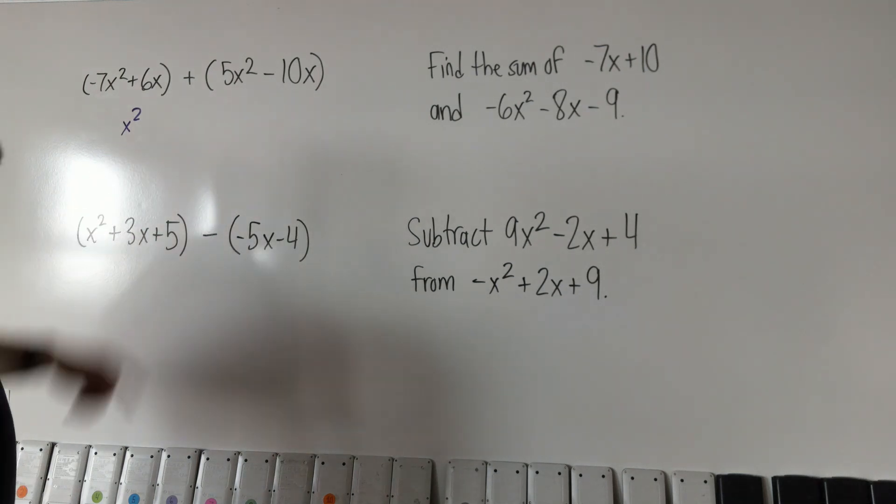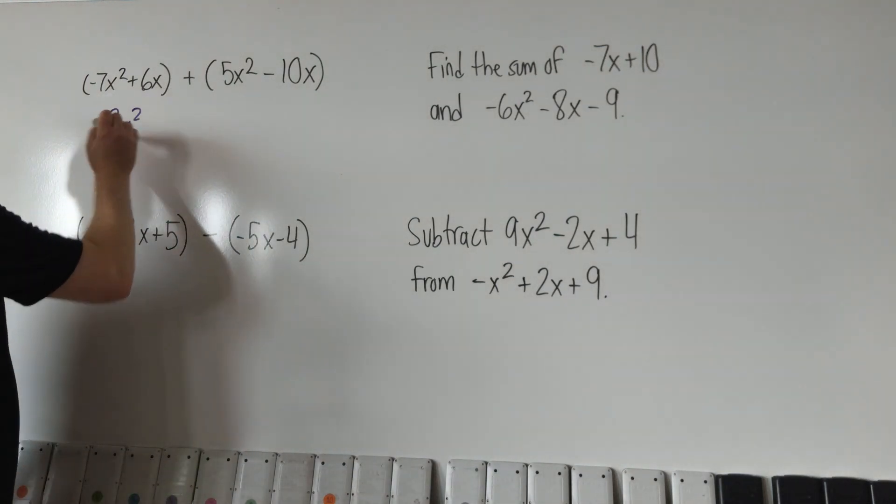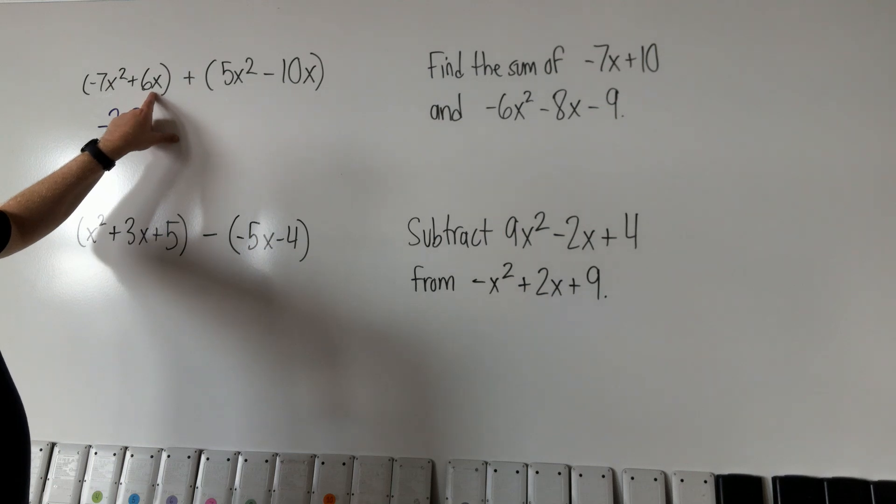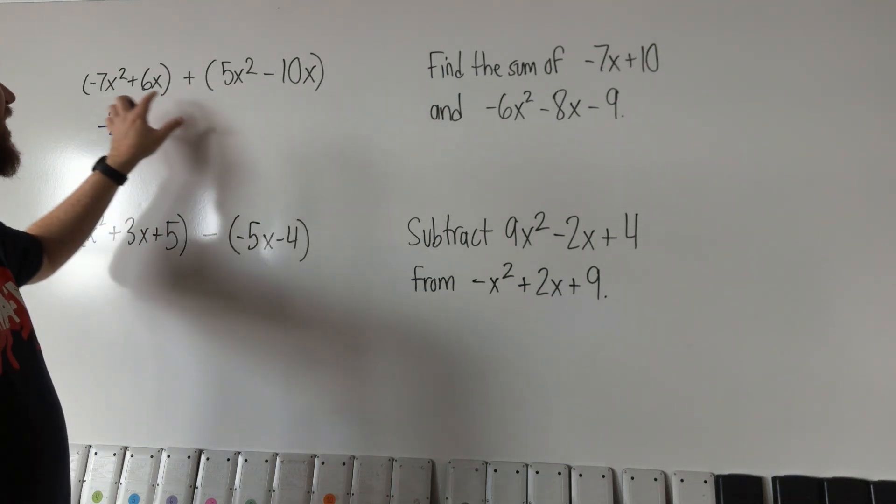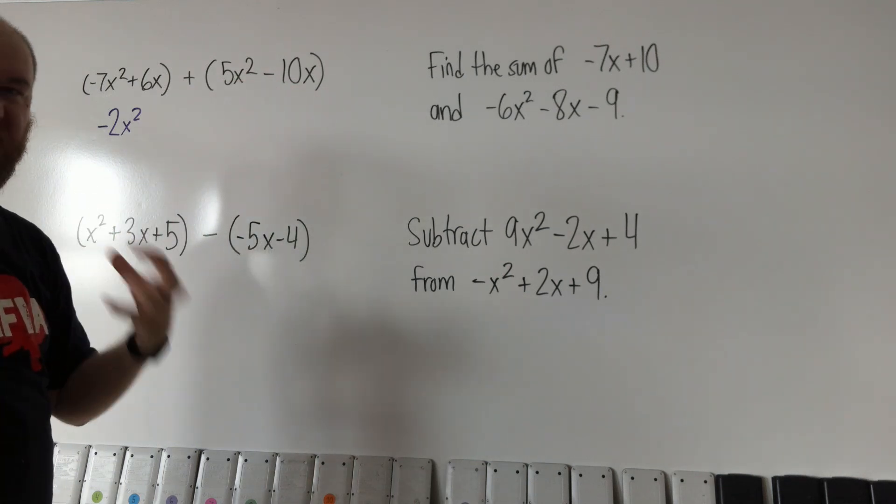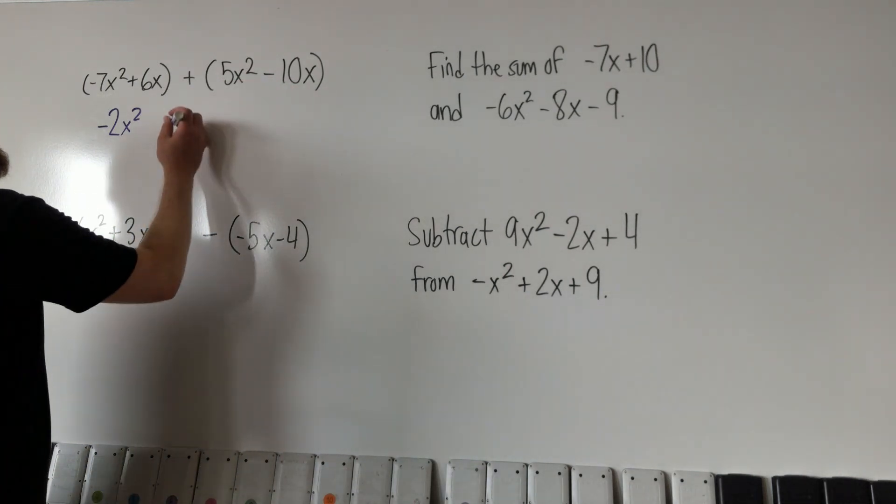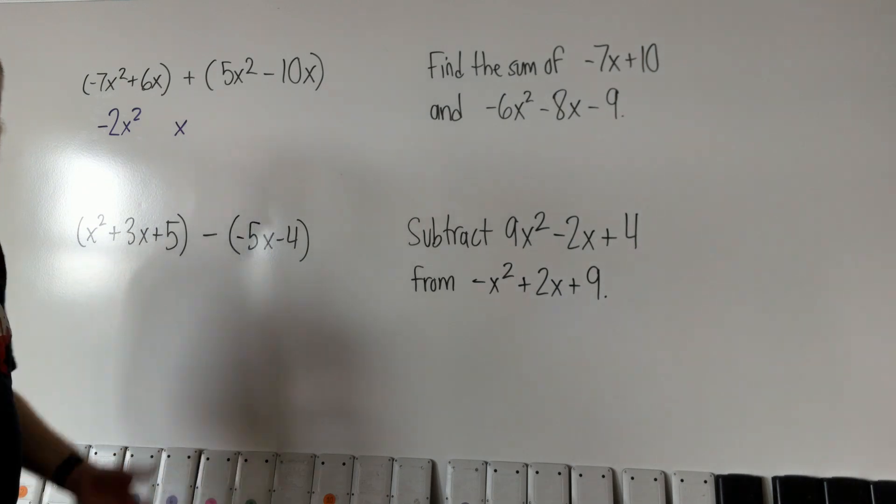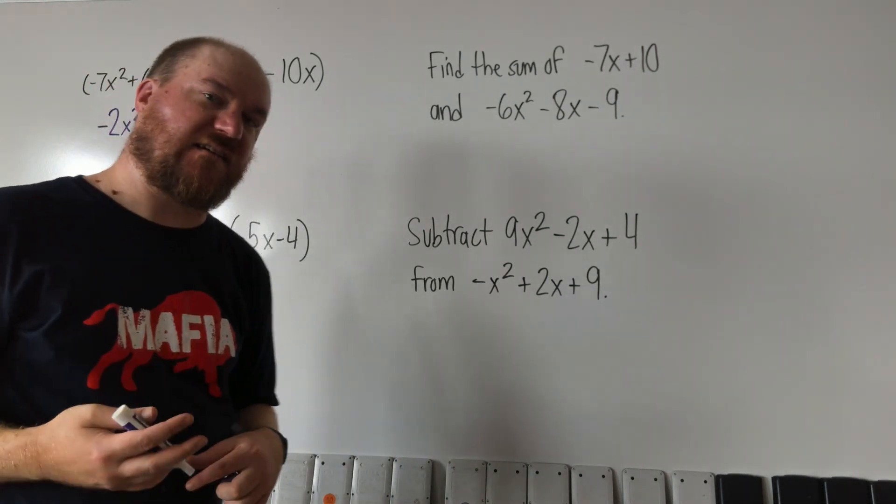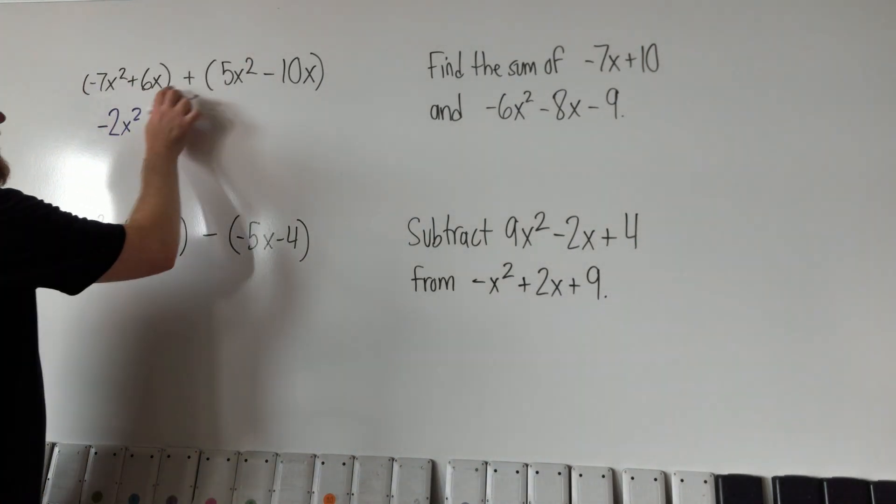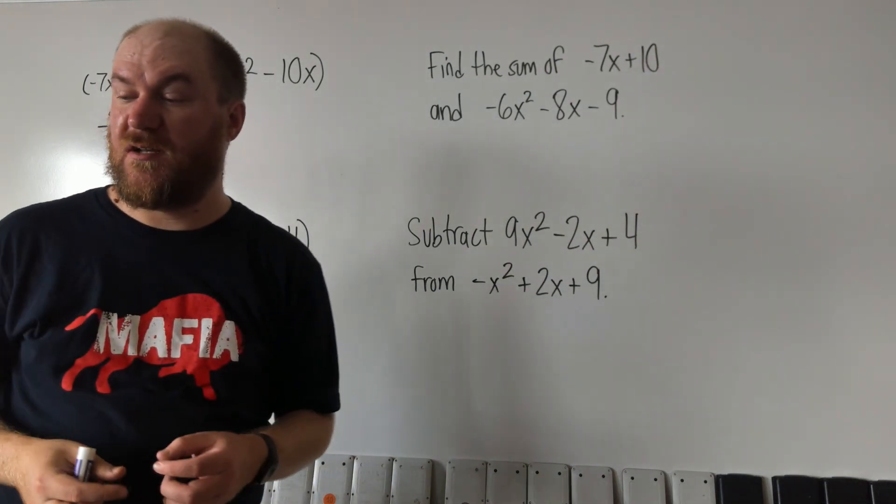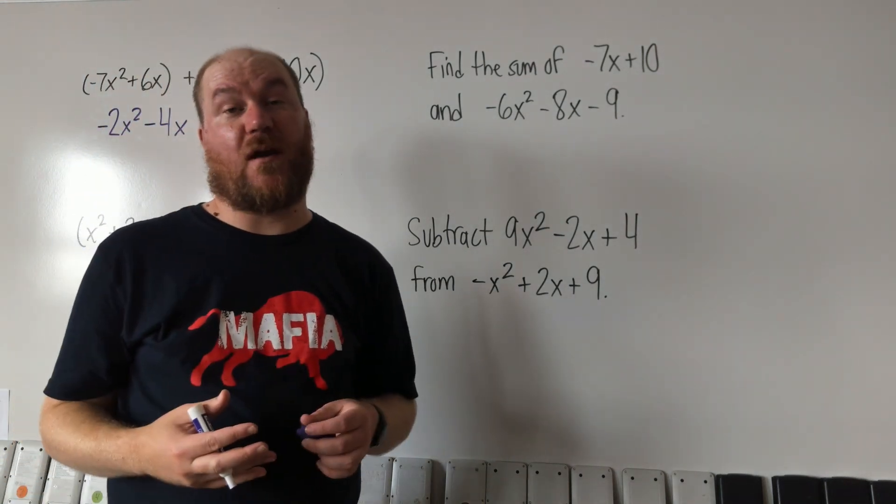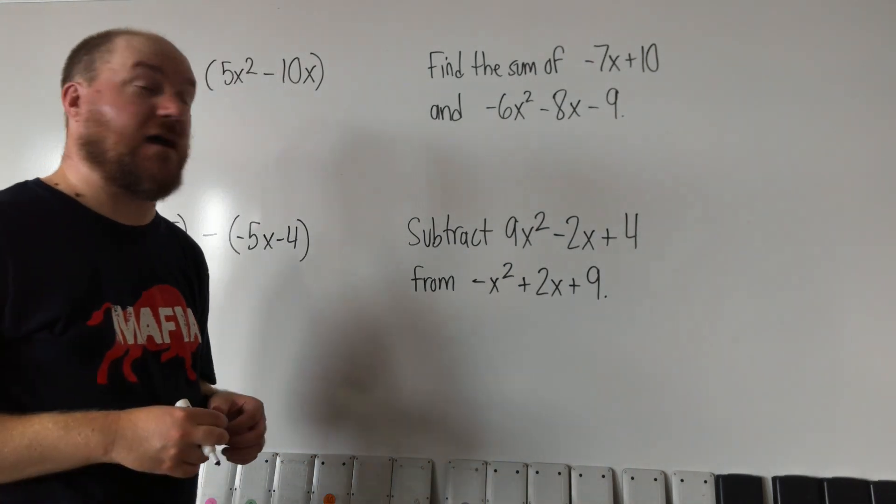So negative 7 plus 5 is negative 2 and then the same thing is going to happen to the 6x and the negative 10x. Again, they have like terms, they have the same exact variables. So I'm just going to bring along that variable. The numbers in front get combined, 6 minus 10 or 6 plus negative 10 would be negative 4x. So the answer to this question is negative 2x squared minus 4x.